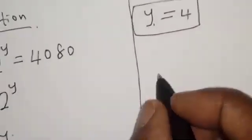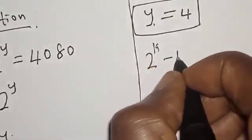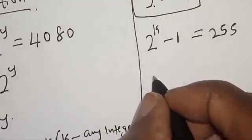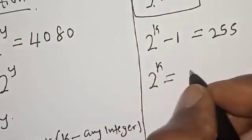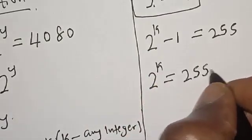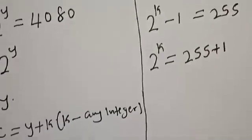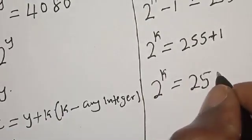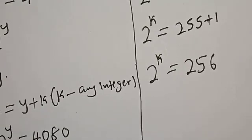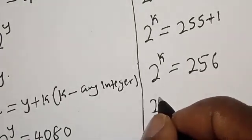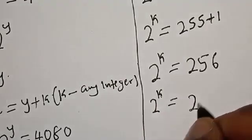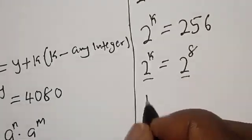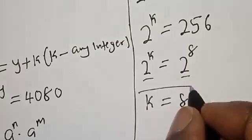From equation 2: 2 raised to power k minus 1 is equal to 255, so 2 raised to power k is equal to 256, which is 2 raised to power 8. Since they have the same base, k is equal to 8.